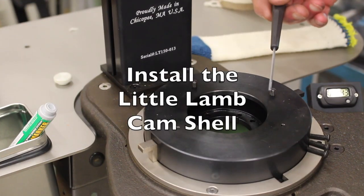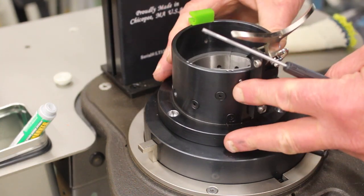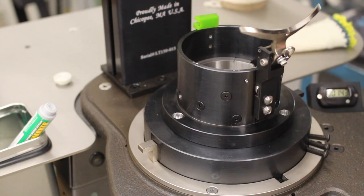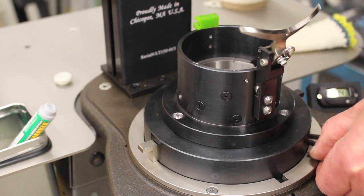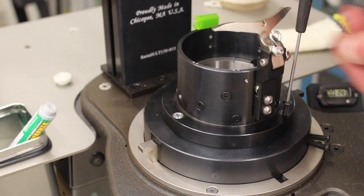Place the Little Lamb cam shell onto the base, making sure it lines up with the two screws that protrude from the top surface of the cam shell base. After installing all three hold-down screws lightly, tighten the screws uniformly.